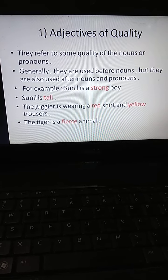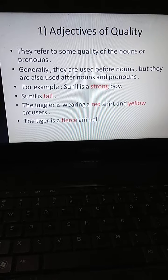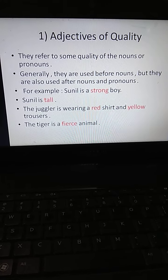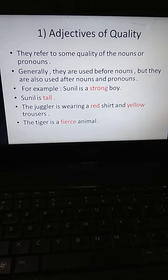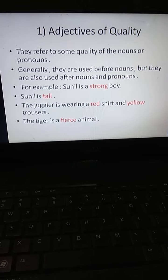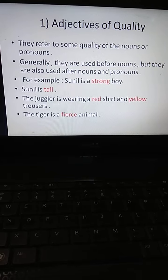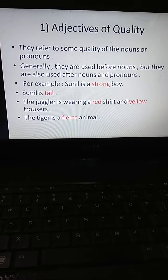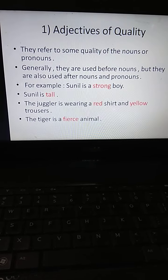For example: Sunil is a strong boy. Sunil is tall. The juggler is wearing a red shirt and yellow trousers. The tiger is a fierce animal. In all these sentences, strong, tall, red, yellow, and fierce, they all are adjective words. Adjectives of quality tell us of what kind.